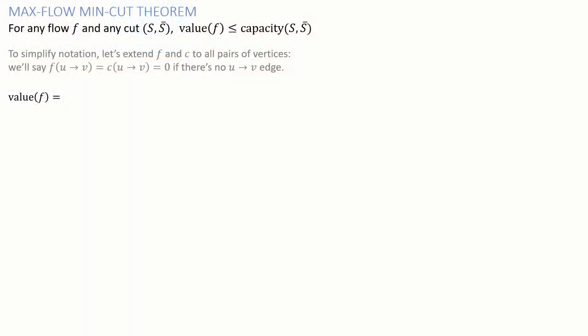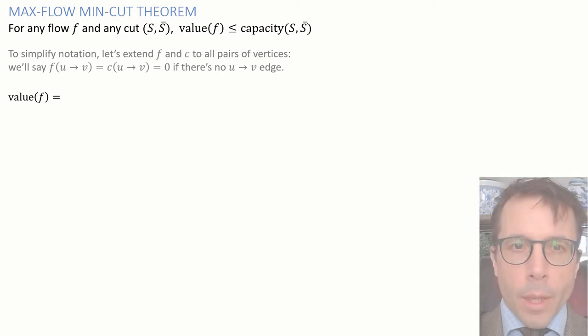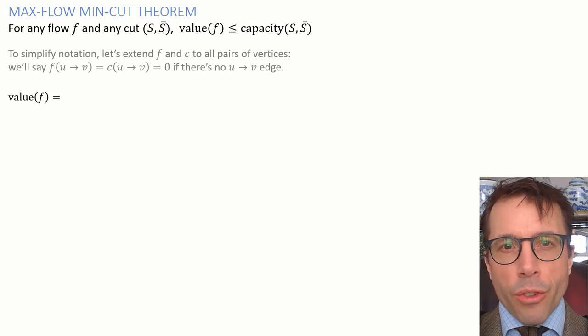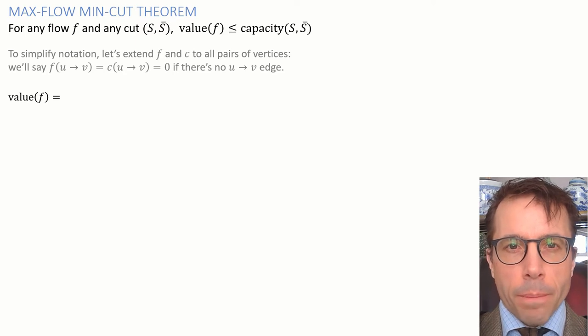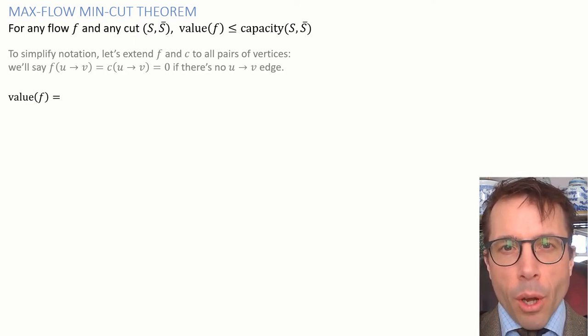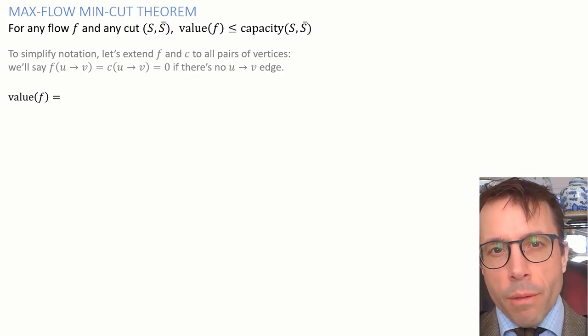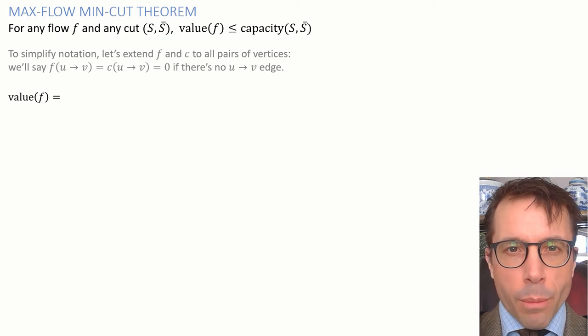First, to save myself some bother in writing out the equations, I'm going to simplify the notation. I'm going to say that flow is equal to zero and capacity is equal to zero for all pairs of vertices where there's no edge between them. This simply lets me write, for example, sum over all vertices, rather than sum over all neighbors of the given vertex. So it's just a way to save a bit of writing. Okay, now we can get started.